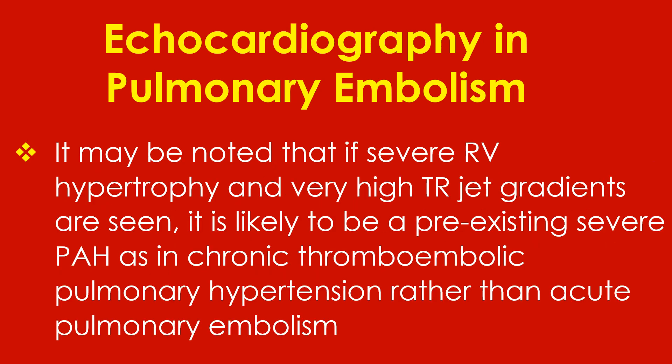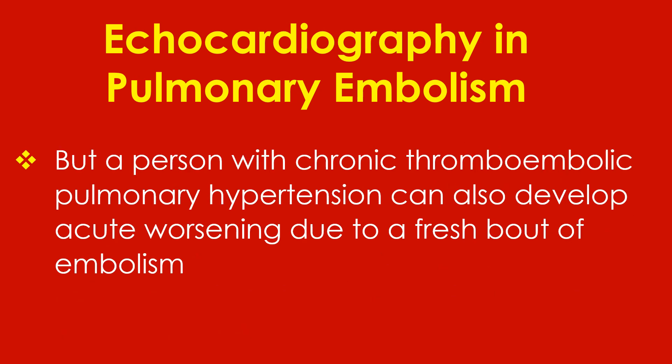It may be noted that if severe RV hypertrophy and very high tricuspid regurgitation jet gradients are seen, it is likely to be a pre-existing severe condition such as chronic thromboembolic pulmonary hypertension rather than acute pulmonary embolism. However, a person with chronic thromboembolic pulmonary hypertension can also develop acute worsening due to a fresh bout of embolism.